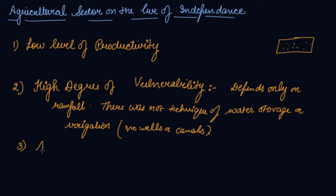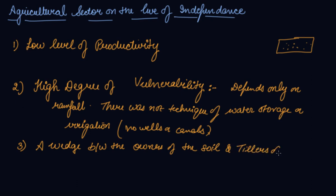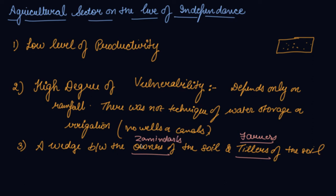The third problem was the wedge between the owners of the soil and the tillers of the soil. The tillers are the farmers — those who grow the crops on the field. The owners of the soil are the zamindars — on whose land the farmers used to cultivate. So there was always a wedge, a conflict, between the zamindars and the farmers.